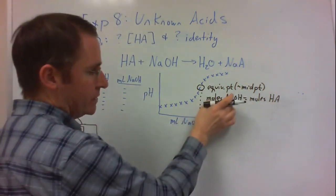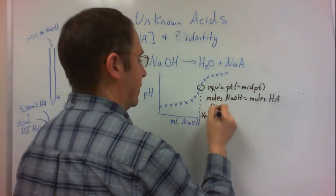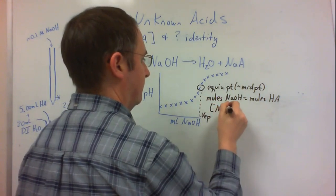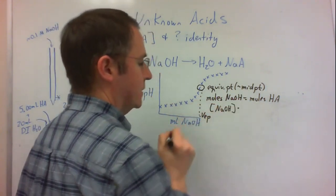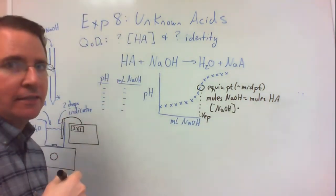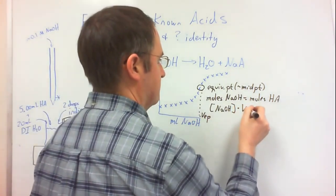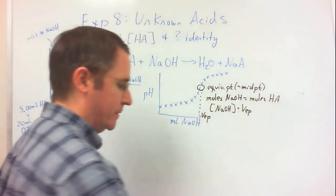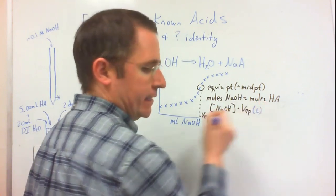I can calculate this number because the moles of sodium hydroxide is always equivalent to the concentration of sodium hydroxide, the number on our label, times the volume of sodium hydroxide that I've added to that point, times our equivalence point volume. But if we use moles, we have to be careful here, we want to make sure our equivalence point volume is in liters.